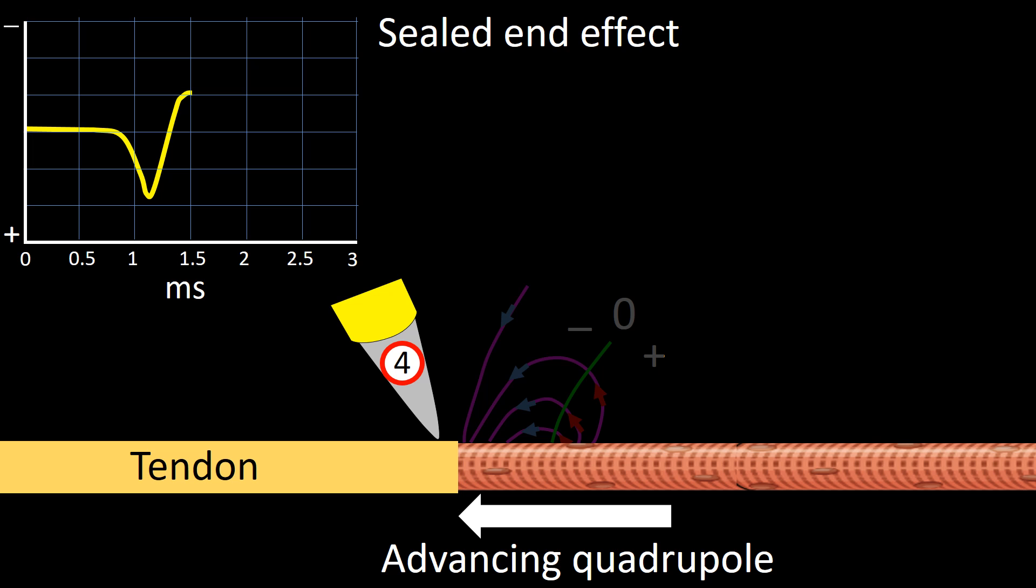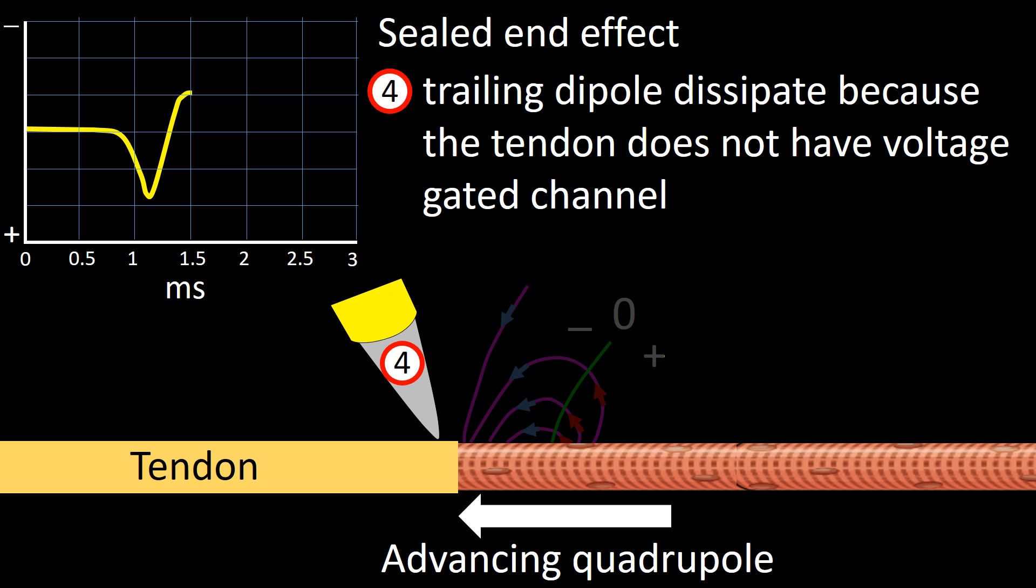Stage 4 is characterized by the trailing dipole dissipating, because the tendon does not have voltage-gated channels. At the display panel, the tracing will go down because of the fading current source, thus returning to baseline.